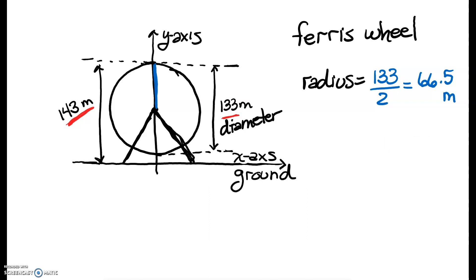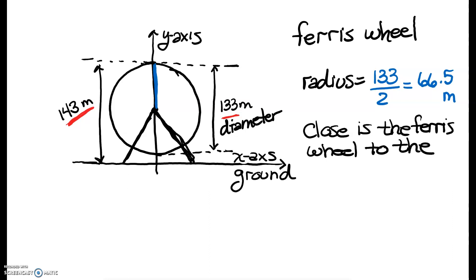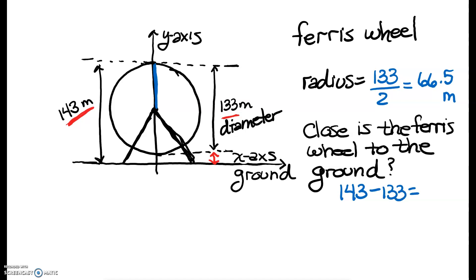Our radius is 66.5 meters. Now let's answer another question: how close is the ferris wheel to the ground? We have the total distance from the top to the ground, and we have the distance from the top to the bottom of the ferris wheel, so that's a simple subtraction. The total distance minus part of the distance gives the missing distance — it is 10 meters from the ground.